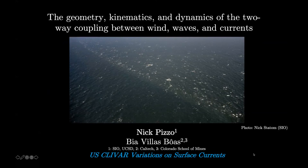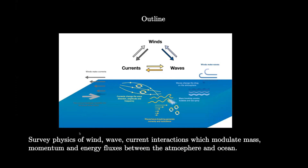Next up is Nick Piso from Scripps, presenting on behalf of his article with B.S. Boas, who is at Caltech and Colorado School of Mines. We were considering the geometry, kinematics, and dynamics of the two-way coupling between wind waves and currents. To orient us, this is a photo taken off the coast of California of waves traveling from left to right interacting with a mesoscale current feature. We noticed enhanced and localized wave breaking in this region. What we did in the article was mostly a survey of wind-wave-current interaction, and these interactions are very interesting because they can facilitate radical fluxes of mass, momentum, and energy between the air and the sea.